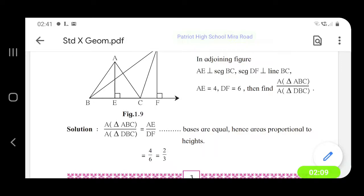So, area triangle ABC upon area triangle DBC is equal to AE upon DF. AE we know it is 4 and DF we know is 6.